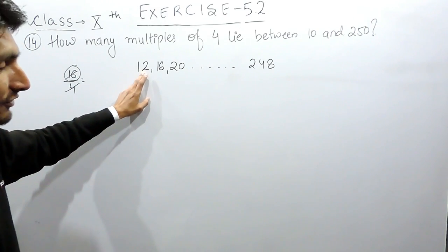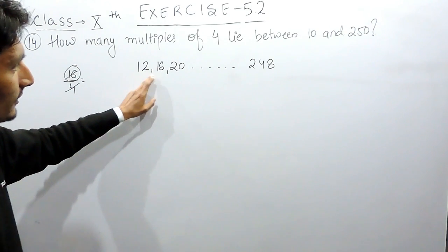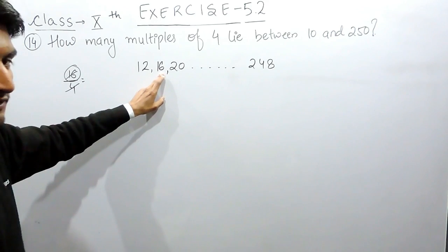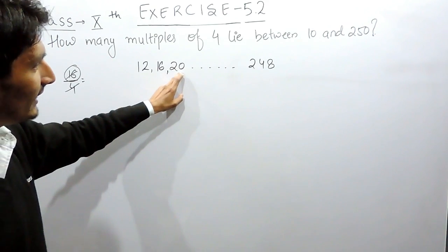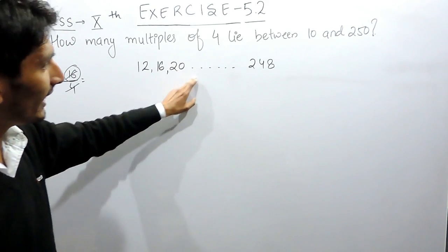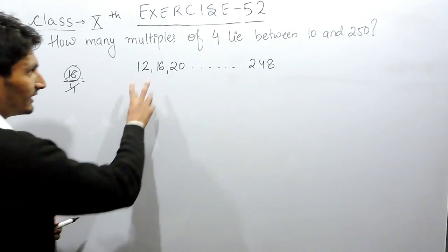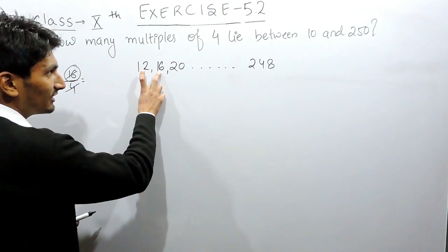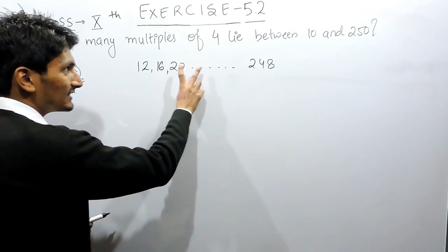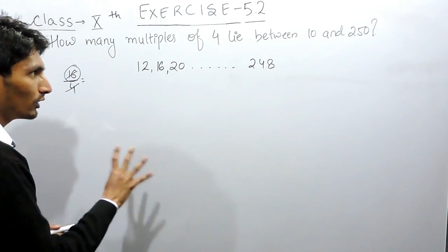This is the first term. To make the second term, you are adding a constant to this which is 4. Again, you have added the same constant 4 and so on. So obviously, the common difference here, or you can say the difference between any two terms is the same which is equal to 4.